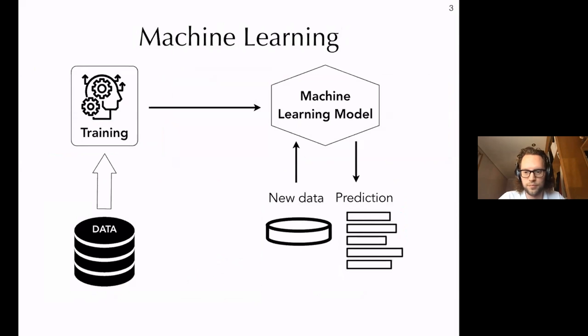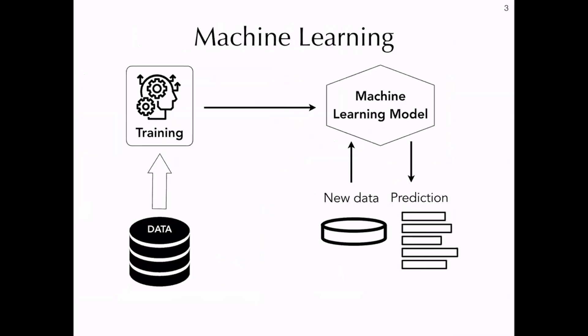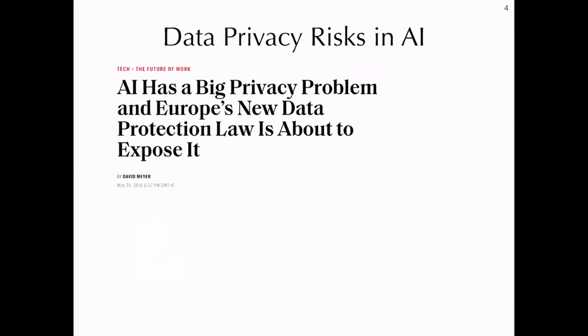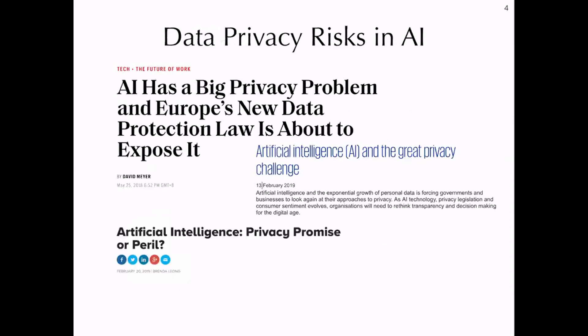A typical machine learning workflow consists of two phases: training and inference. During the training phase, a model is learned from the data. In the inference phase, this learned model will be used to make predictions on new data. The accuracy of a machine learning model depends on how good its training data is. Hence, there is a rush to collect more data, raising serious privacy concerns.